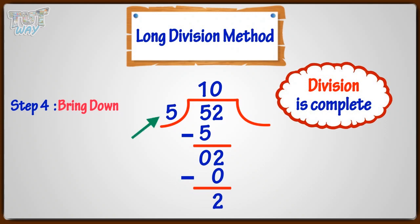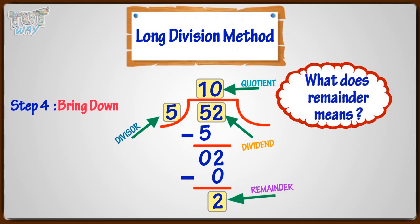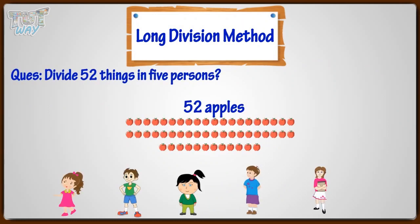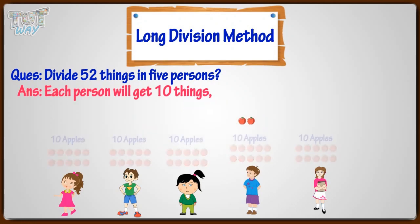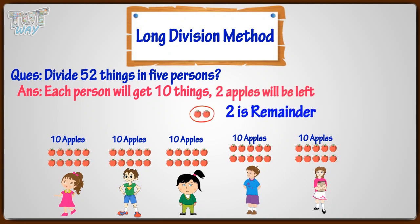Five is divisor. Fifty-two is dividend. Ten is quotient. And the remainder is 2. What does remainder mean? If we divide 52 things among 5 persons, each person will get 10 things and 2 will be left undivided. So 2 is the remainder.